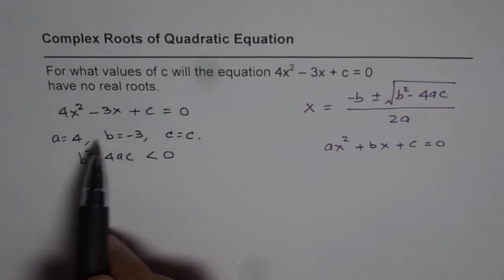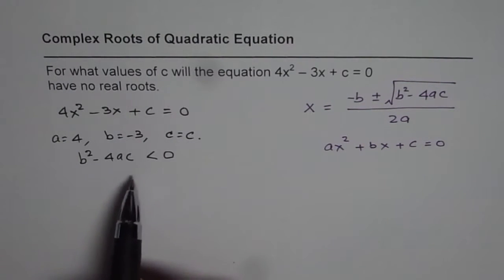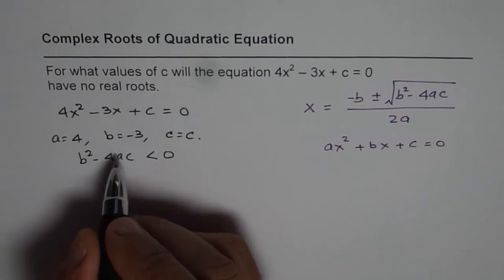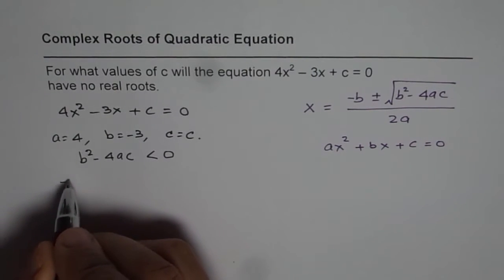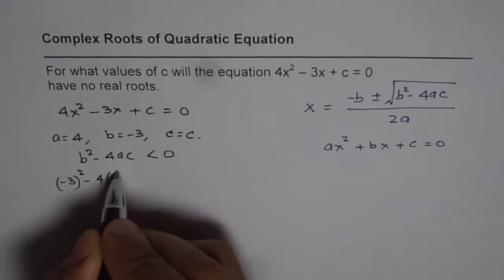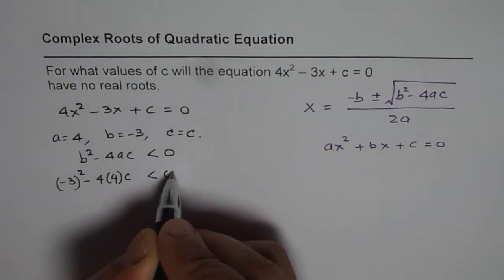We already know a and b, we can find c. So a is 4, b is -3, so let's substitute. So (-3)² - 4(4)c < 0.